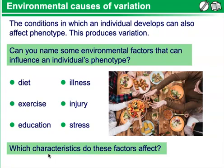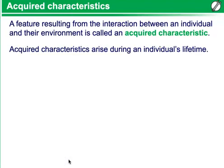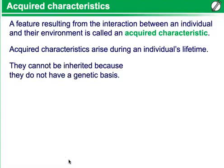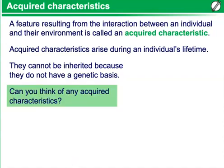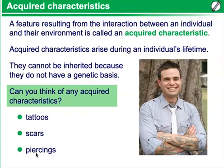So which characteristics do these factors affect? Acquired characteristics. A feature resulting from the interaction between an individual and their environment is called an acquired characteristic. Acquired characteristics arise during an individual's lifetime and cannot be inherited because they do not have a genetic basis. Examples include tattoos, scars, or piercings.